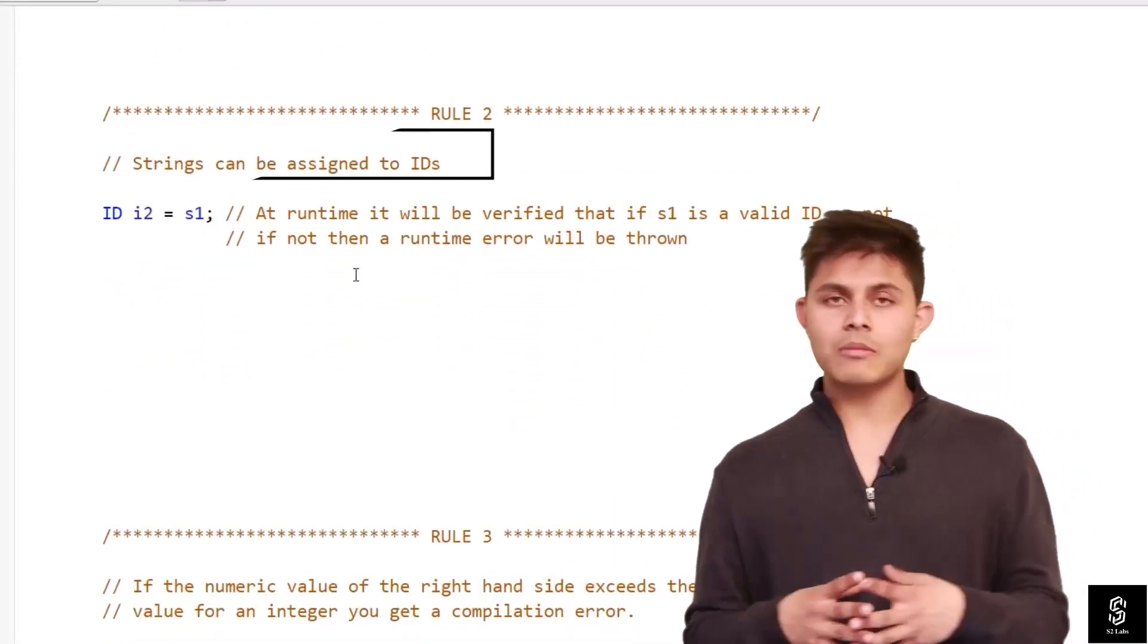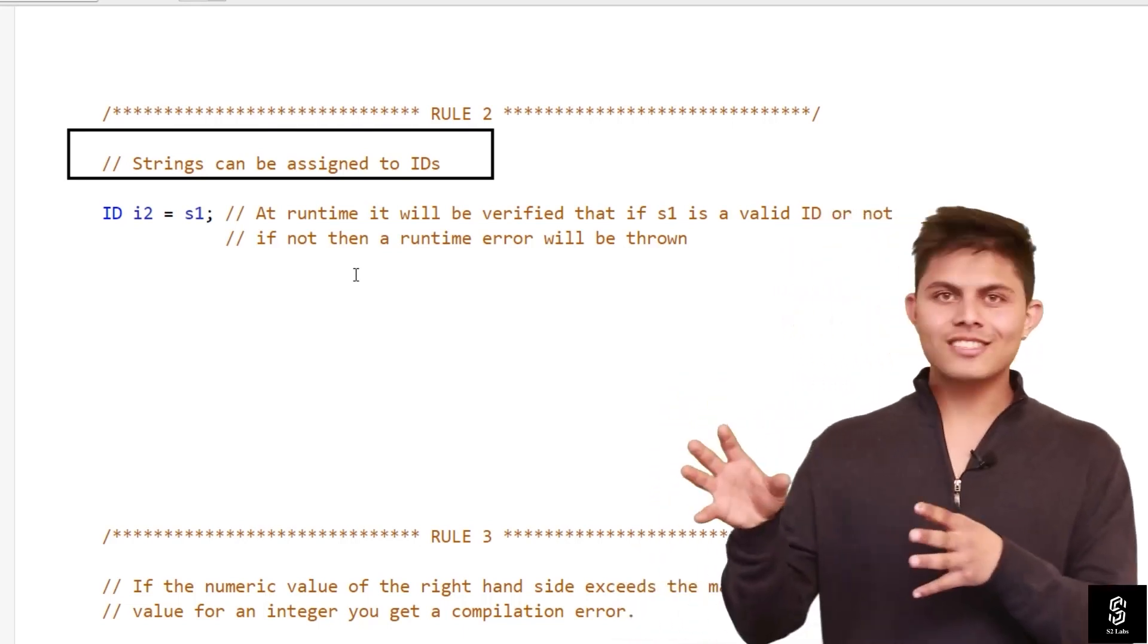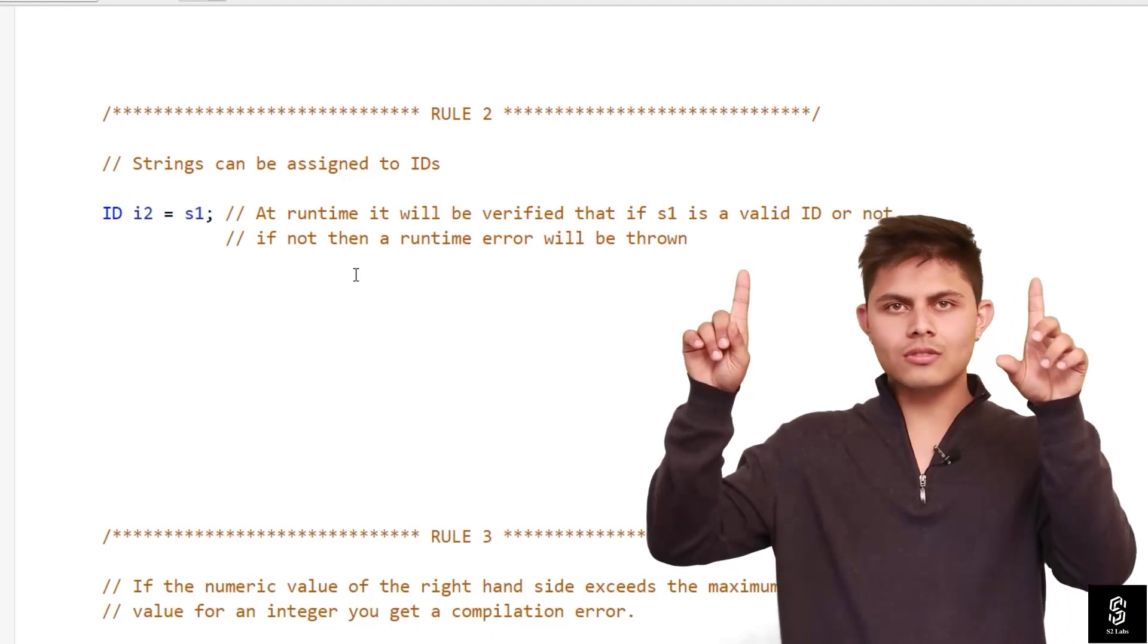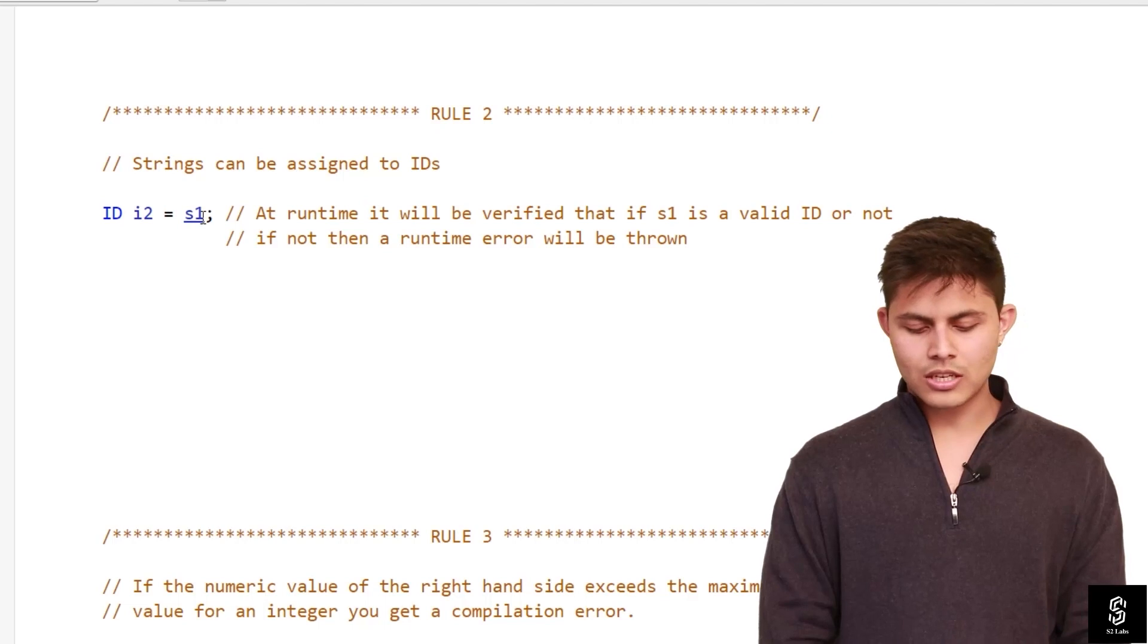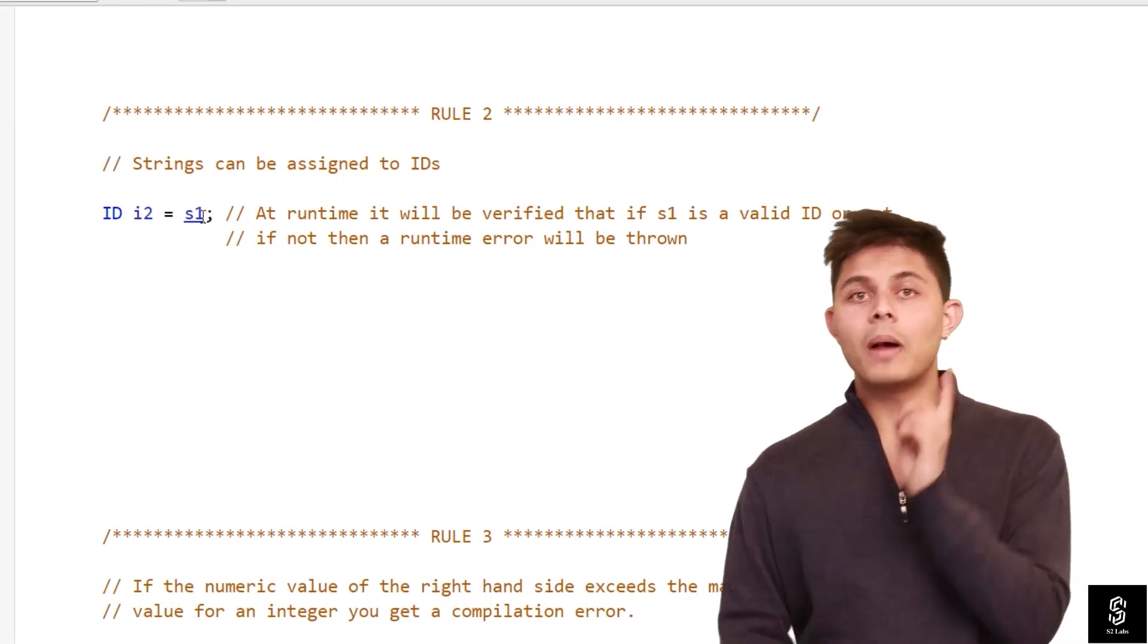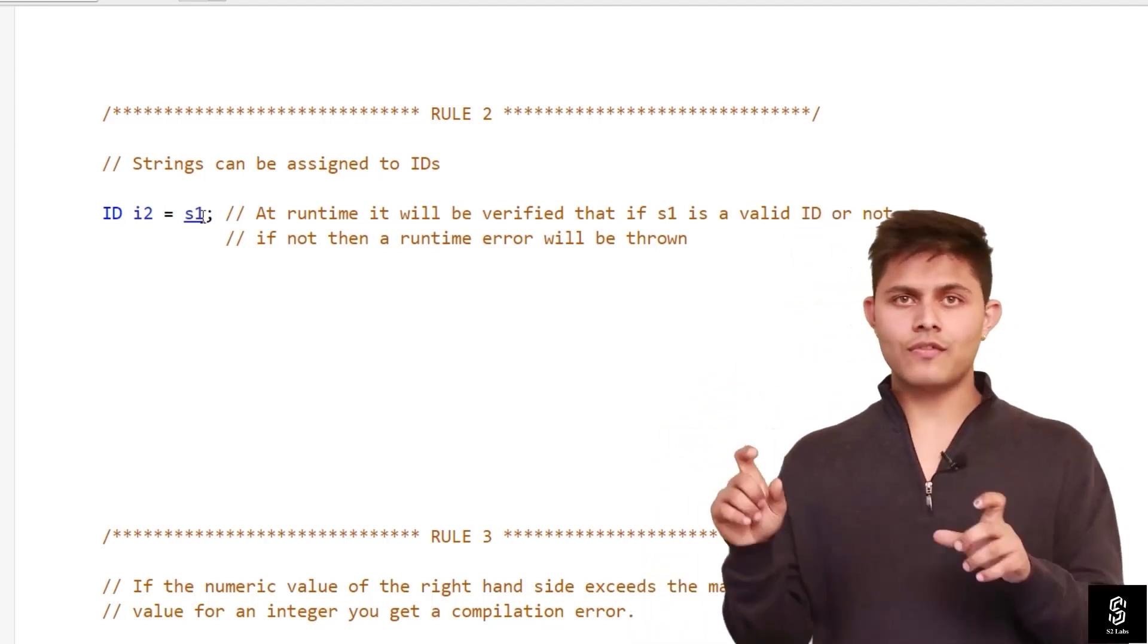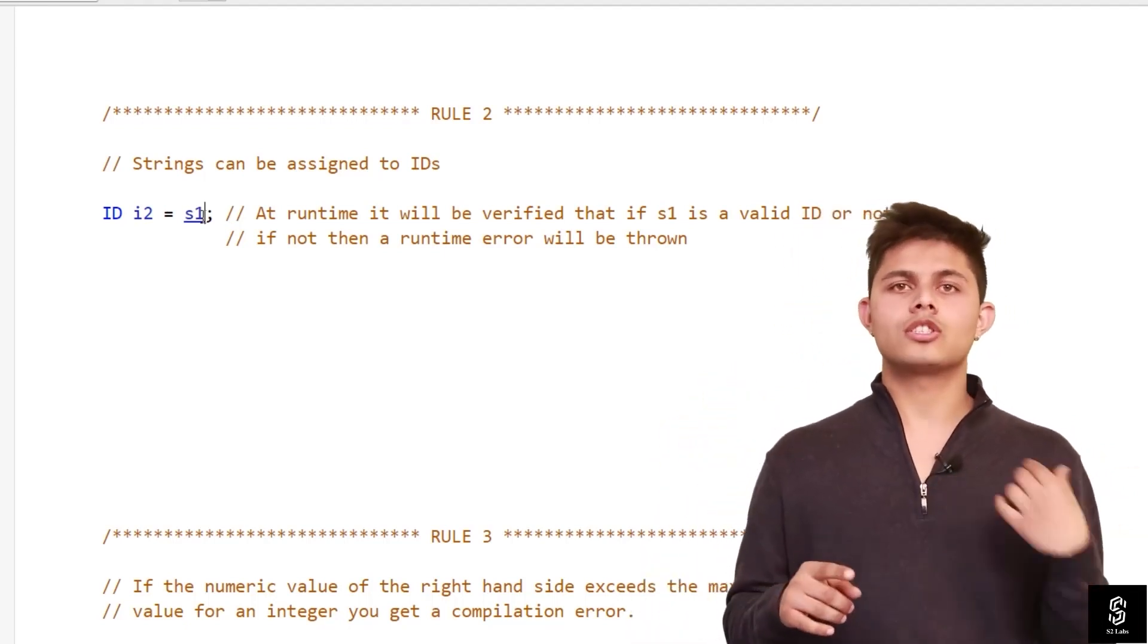The next rule, the second rule that we have: strings can be assigned to IDs. We also know that strings can be assigned to IDs because at the end, ID i equals to, we write down single quotes, right? And those single quotes are nothing but string. So ID i2 equals to s1, this is allowed. But at runtime, this s1 string will be verified and validated whether it is a legitimate ID or not. If it is not, then a runtime error will be thrown.